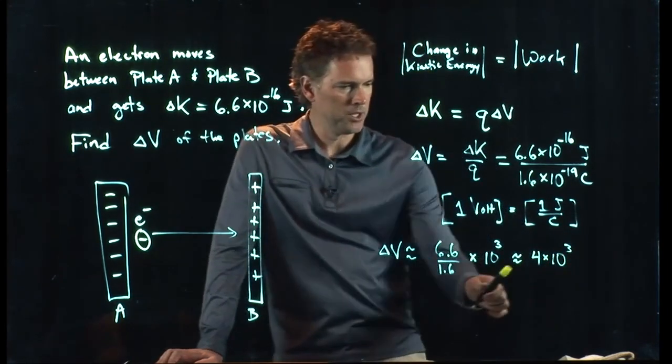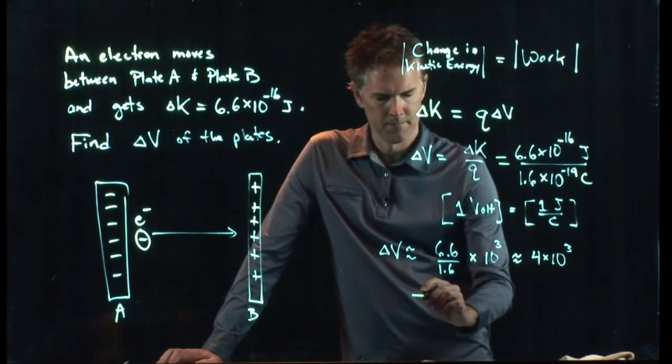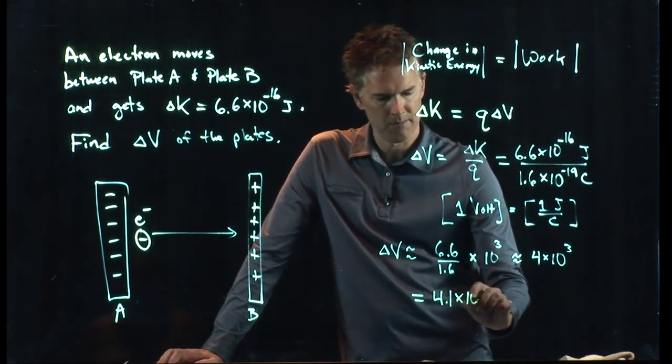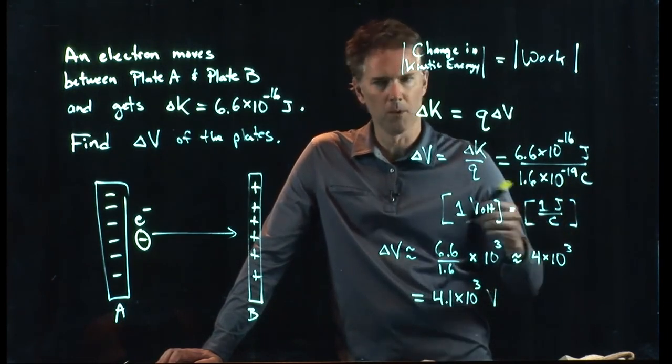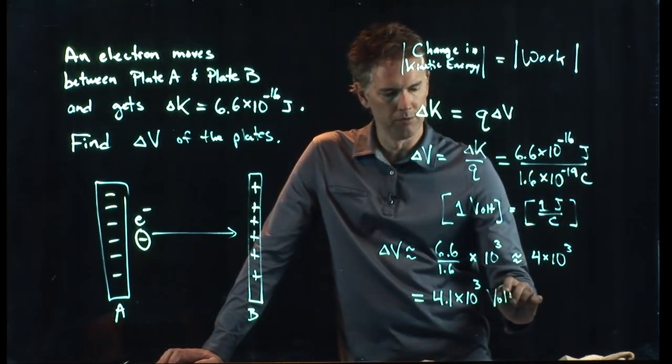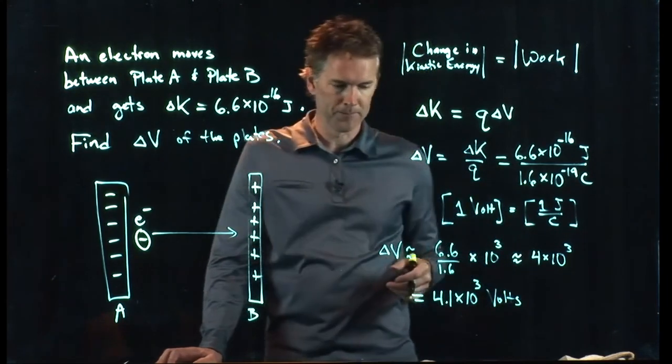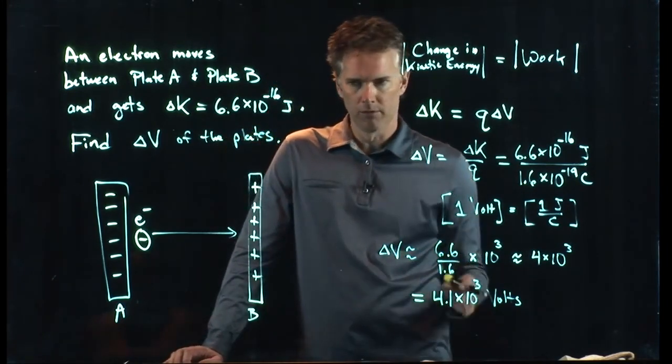And did anybody punch it into their calculator and get a real number there? 4.1 times 10 to the 3. And the units are joules per coulomb or volts, which you can just write with a capital V when you plug it in to your homework. 4.1 times 10 to the 3 volts.